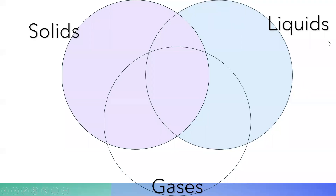Yesterday, you were going to complete an assignment filling out a Venn diagram about the similarities and differences between solids, liquids, and gases. So on the next slide, we are going to be giving you an example of what your assignment should have looked like. It could be a little different — you might have more facts than I do, so this is just a quick review of what we learned from yesterday.